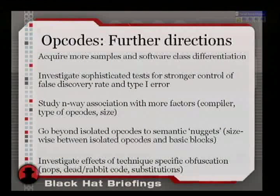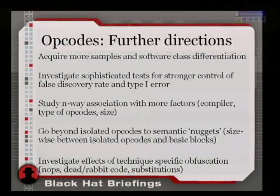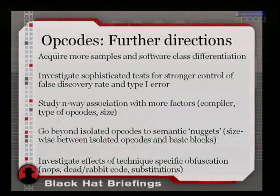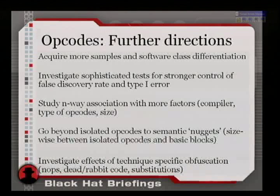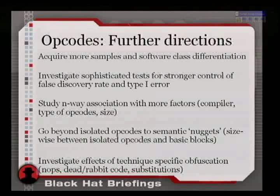There are further directions: I added categorical data during the IDA inventorying. I studied this in a two-way contingency table — class versus opcodes — but I could add a third or fourth dimension for compilers, since compilers may produce distinctive patterns worth investigating. You can also expand to common opcode nuggets, somewhere in size between basic blocks and isolated opcodes, and of course try to attack the scheme specifically to defeat it.